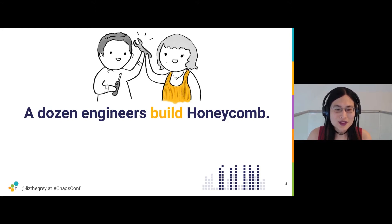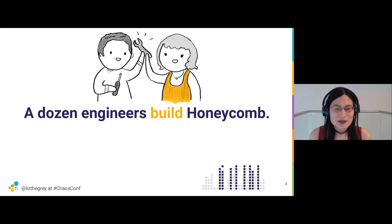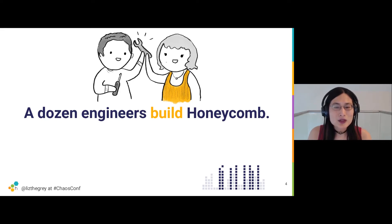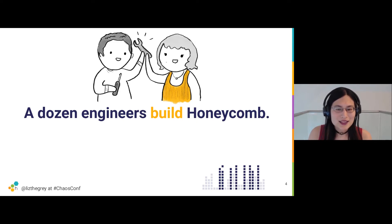There's a little bit of a problem, which is that unlike some of our competitors, we have a dozen engineers — now up to maybe 15 or 16 engineers. But at the time we did a bunch of this work, we had a dozen engineers. Trying to build a system and verify it's working takes a lot of resources, you would think. But we decided it was going to be really important to invest in chaos engineering at our company.